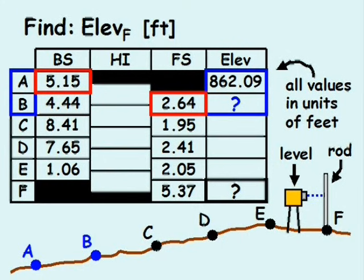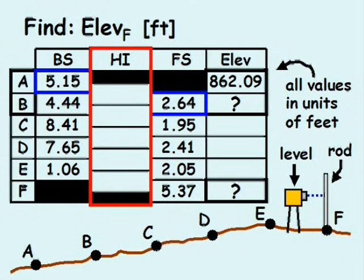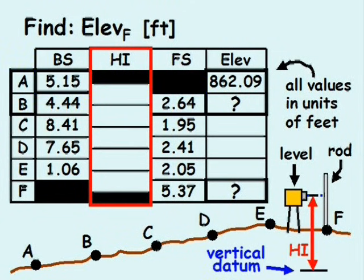The column labeled HI represents the height of the instrument, or more precisely, the elevation of the line of sight based on a vertical datum, or benchmark.